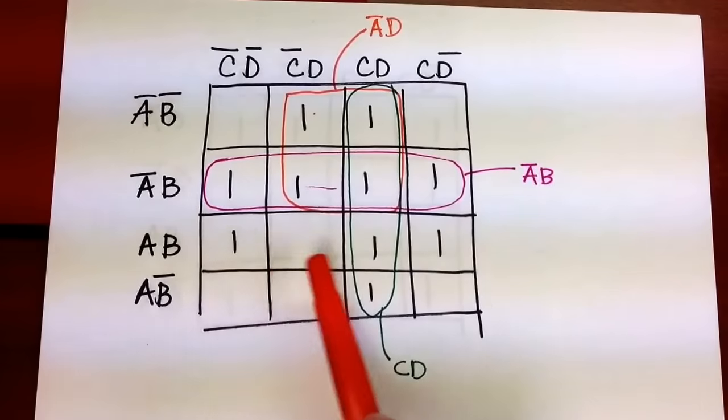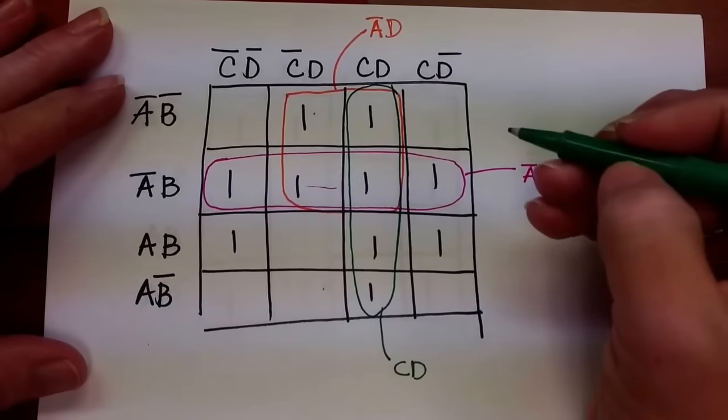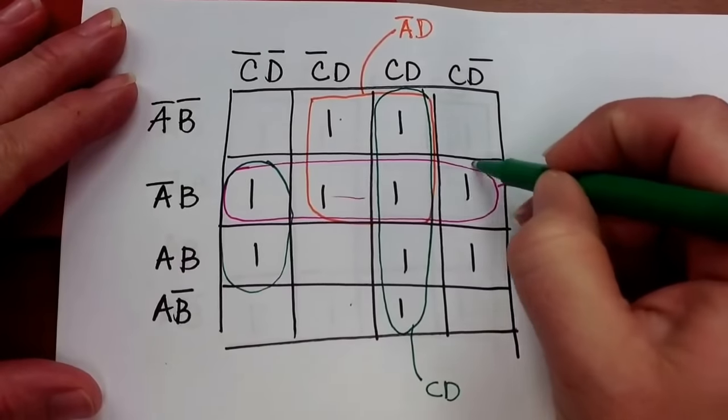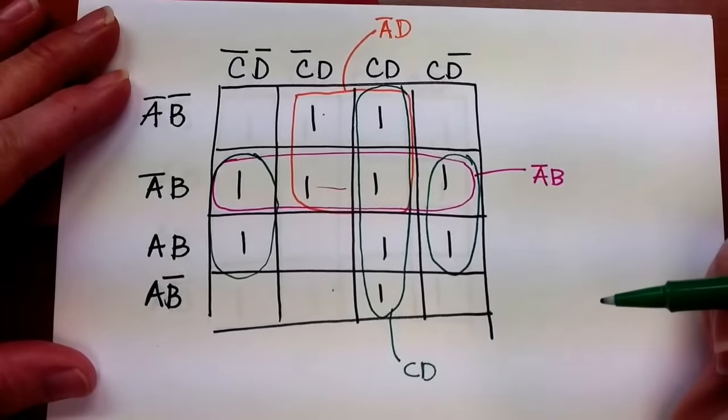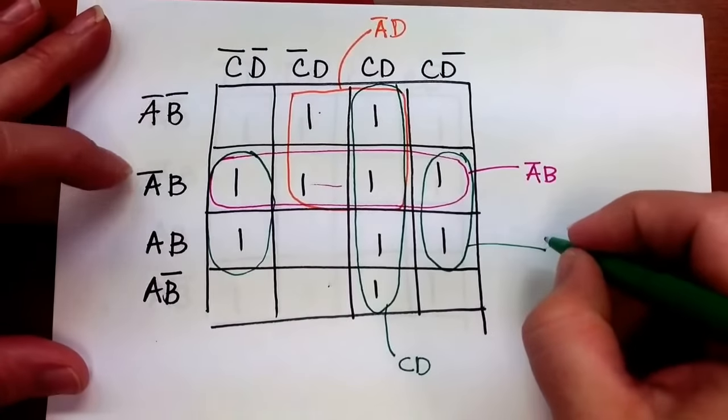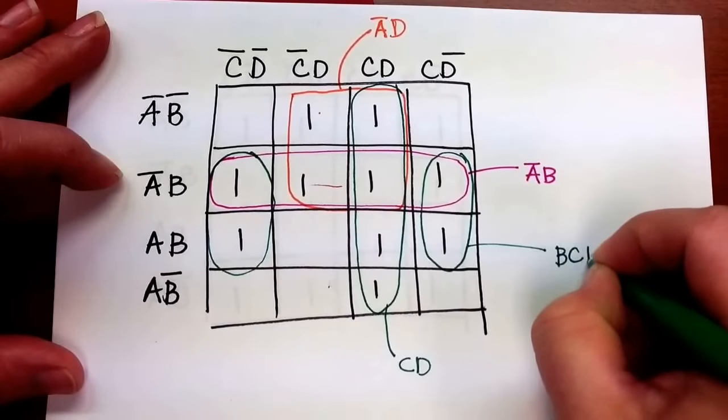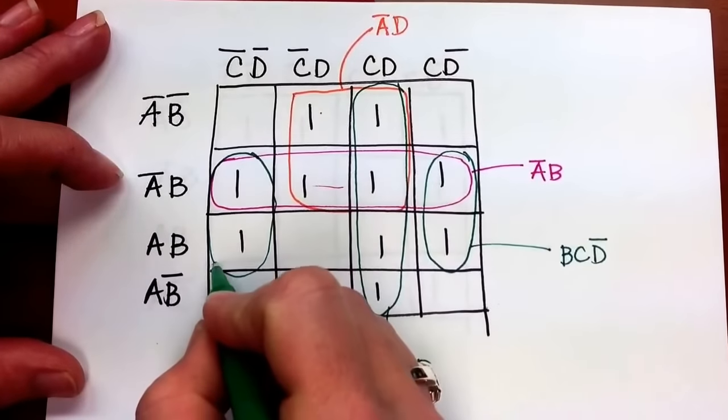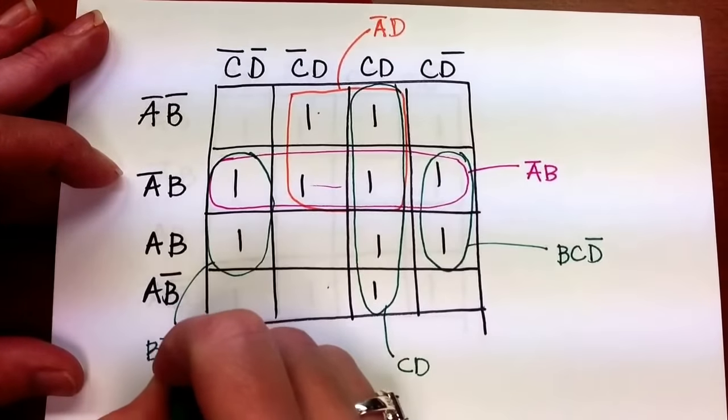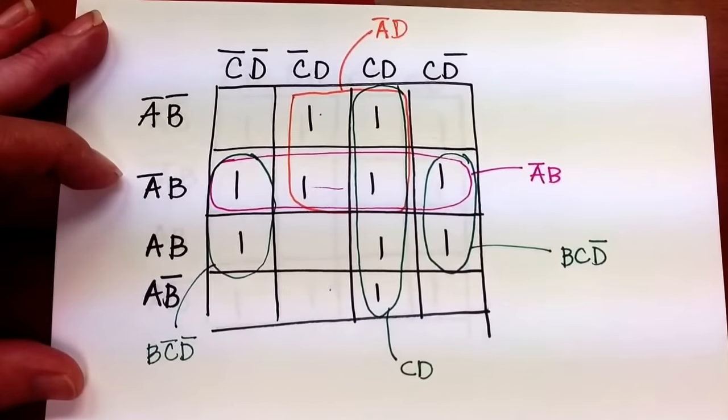And then I still have some other terms I haven't taken care of yet. So let's go ahead and get them into groups. So I'll make a group here and a group here. And so now I have for this group I have B C not D, and for this group I have B not C not D.